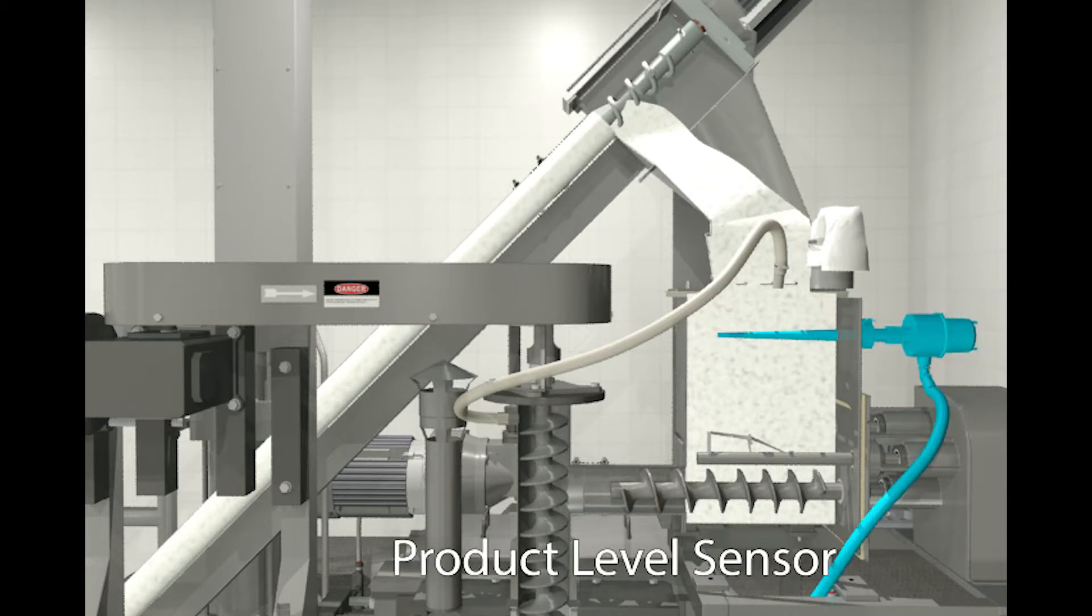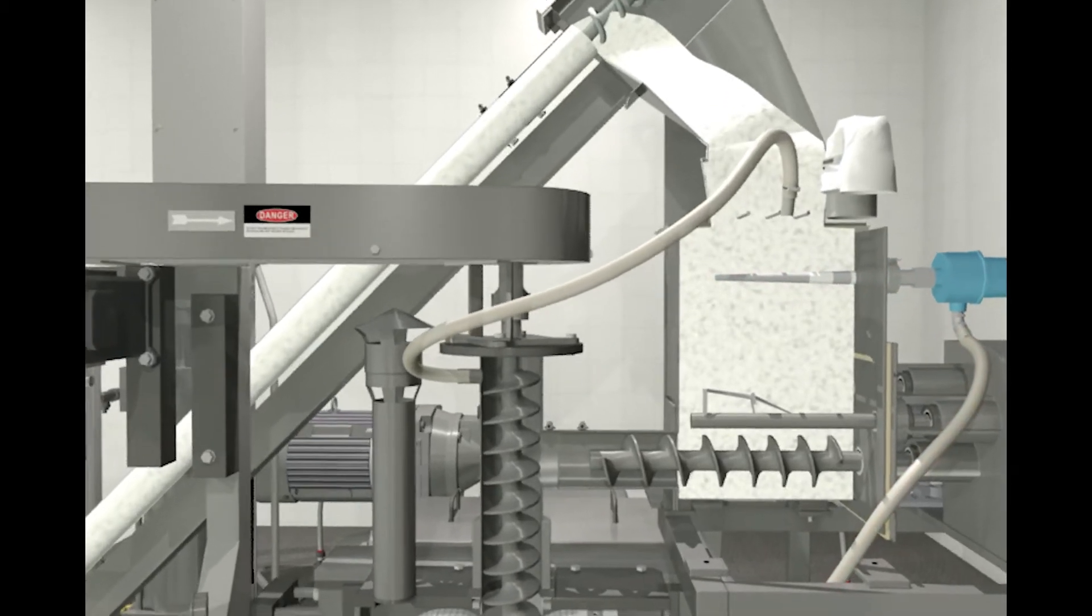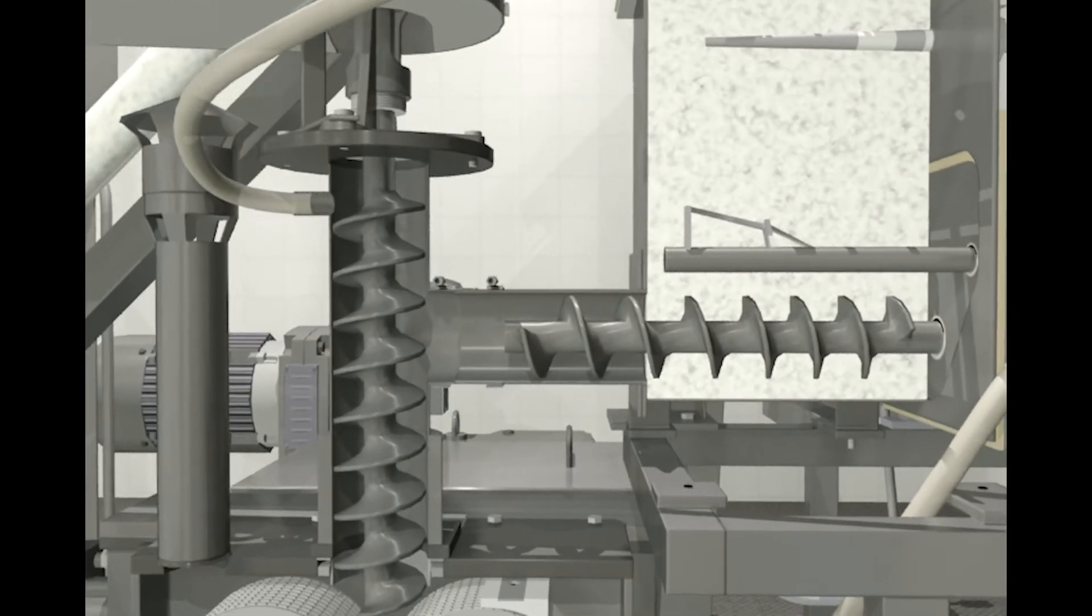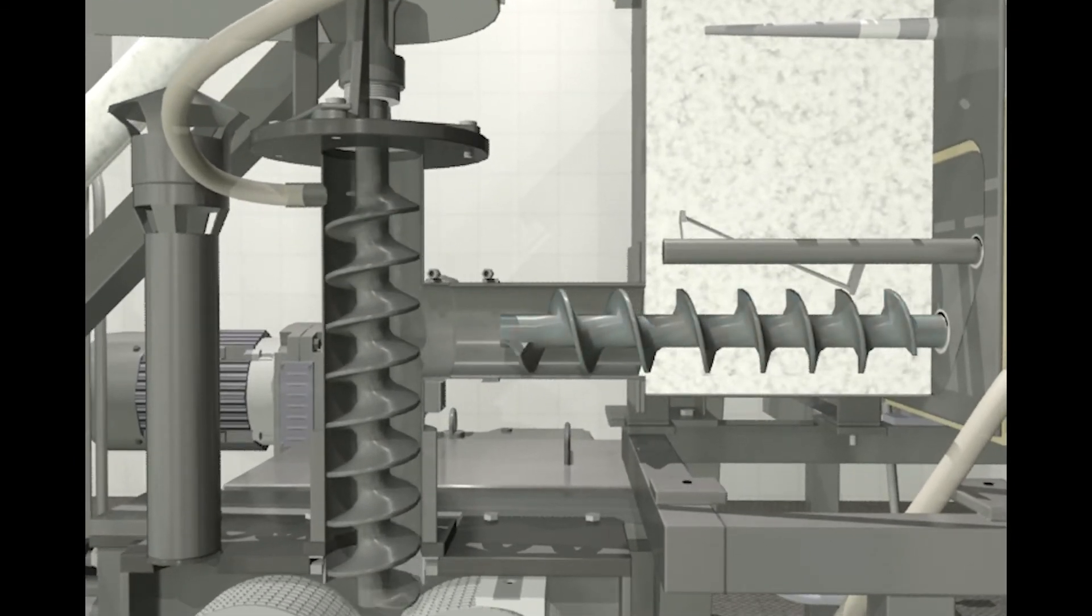A horizontal feed screw then meters the product from the feed hopper into the pre-compression stage for an even flow of material. Material feed rates are critical in this process.